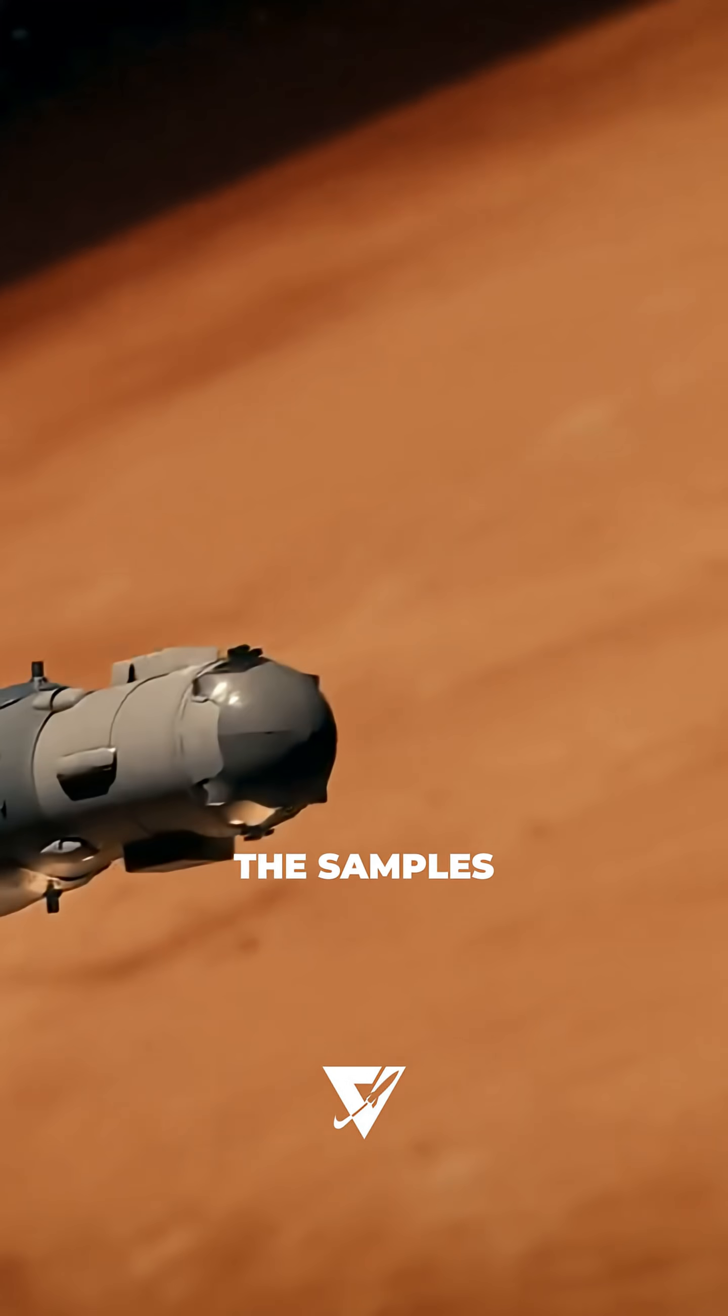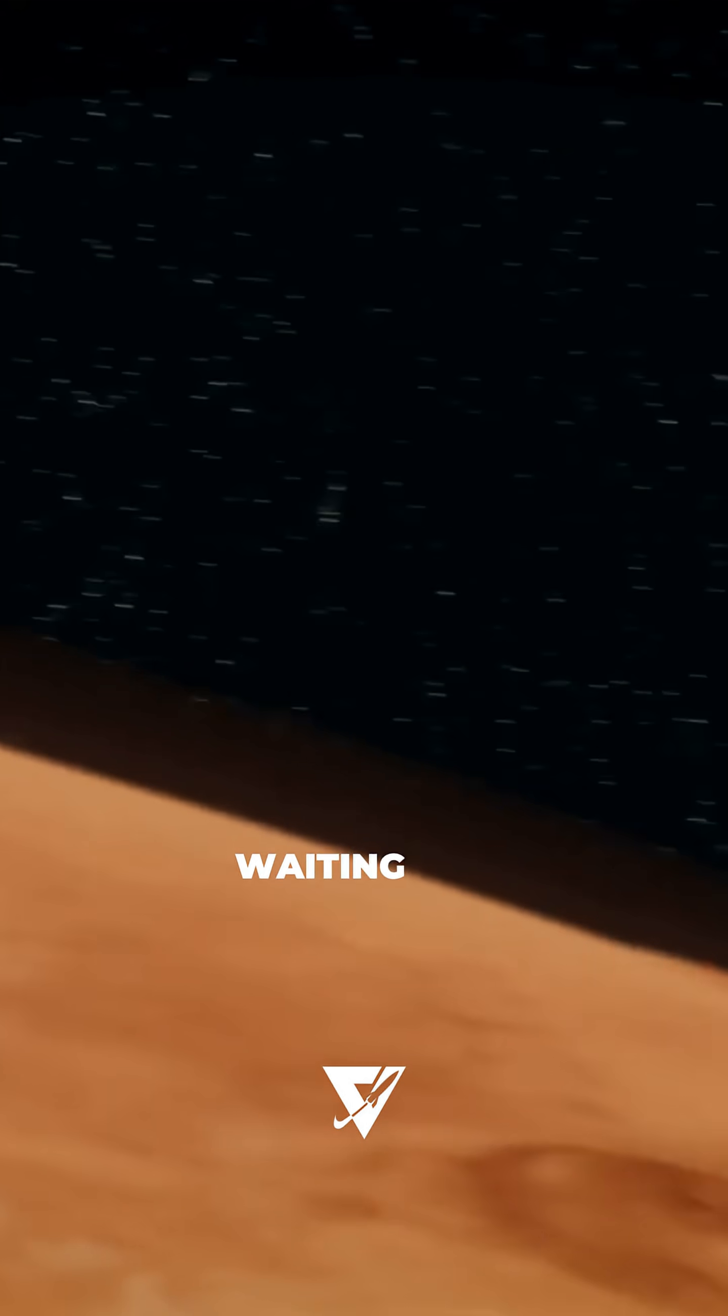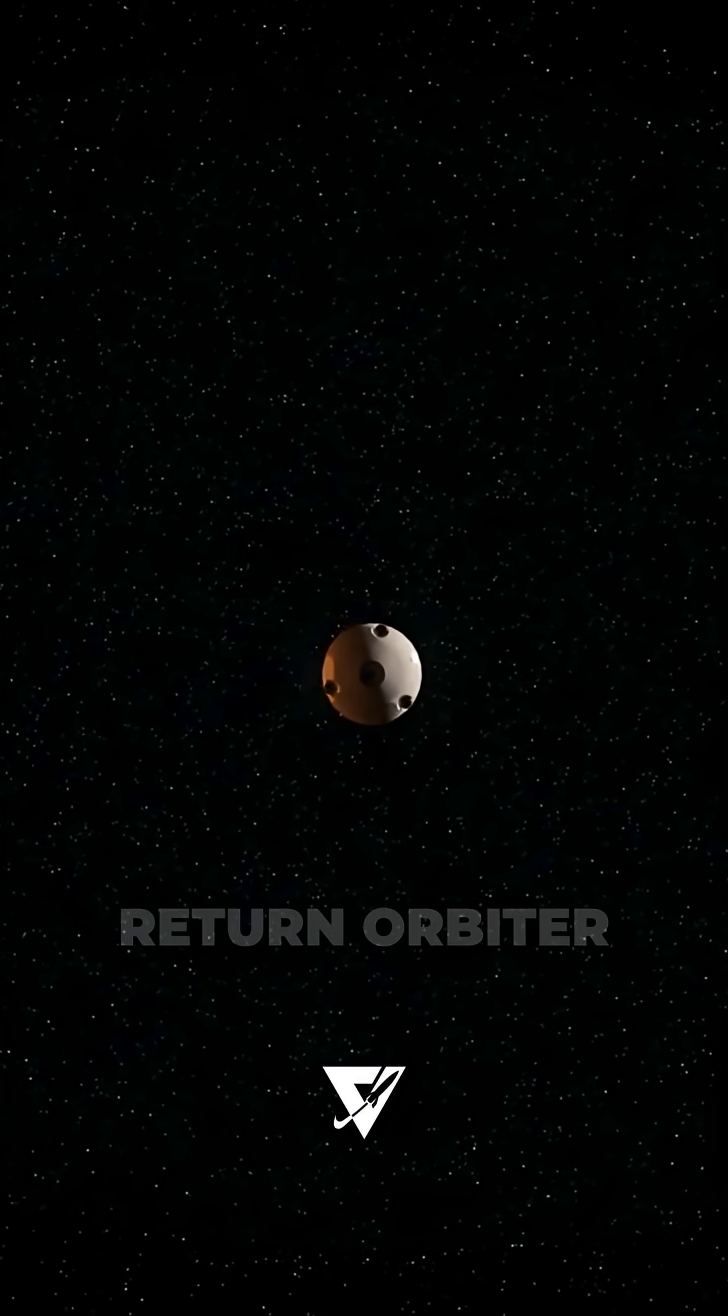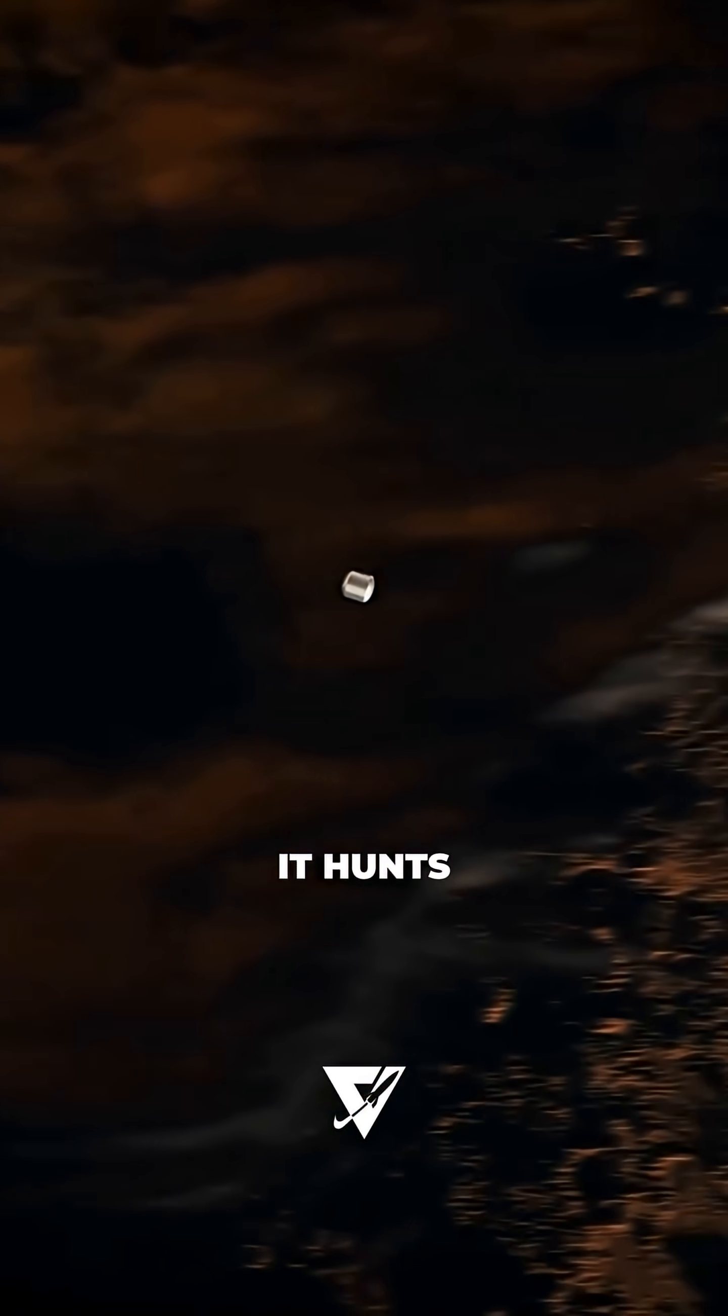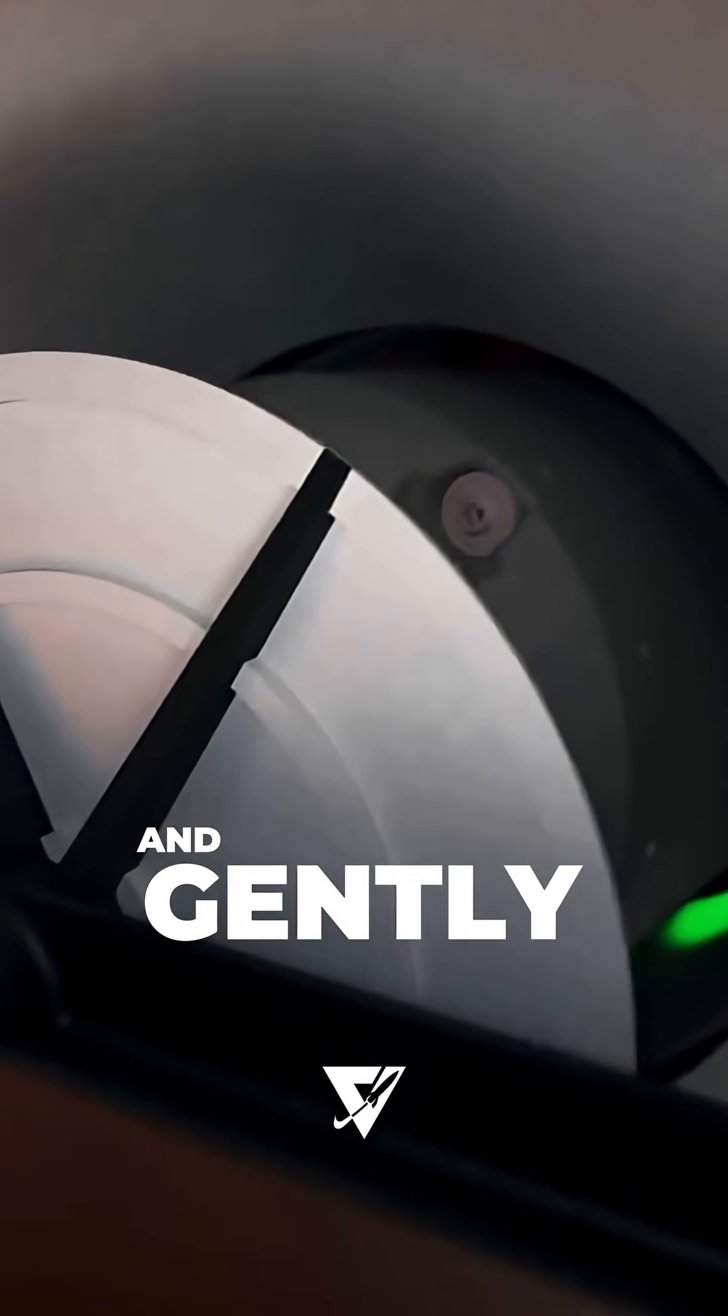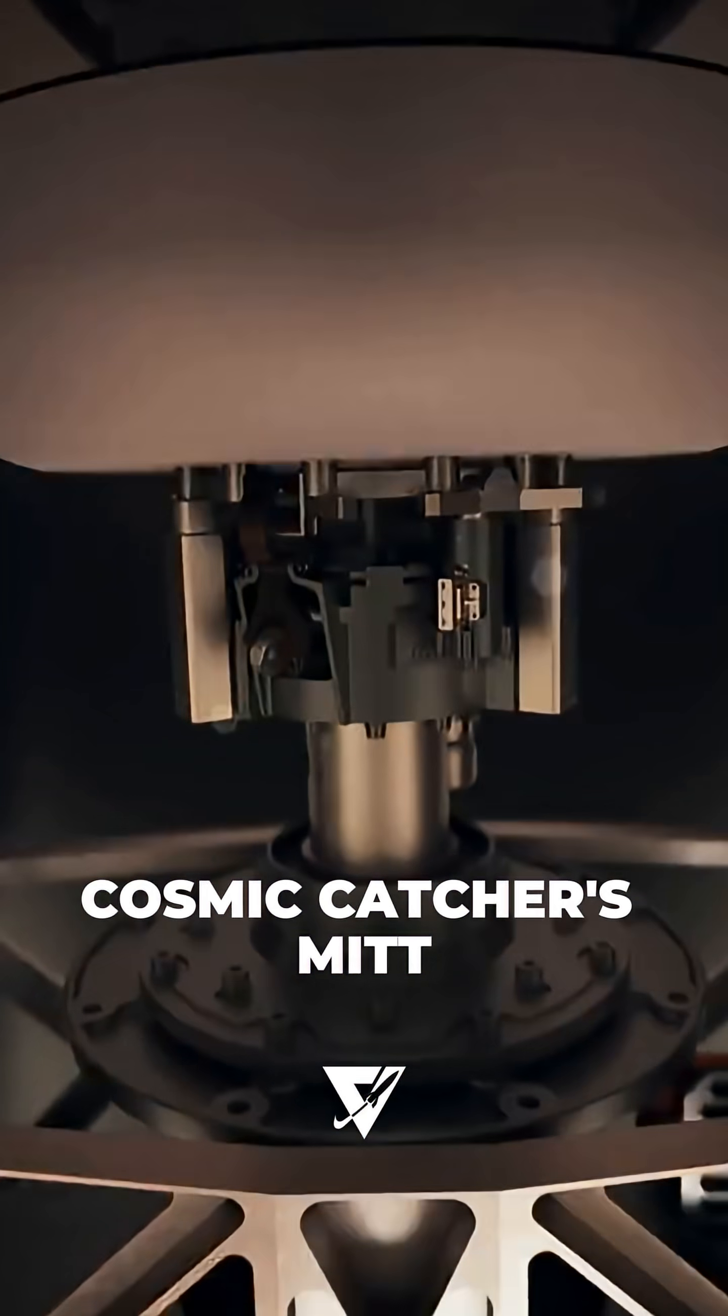The samples drift in orbit, waiting for the next step. ESA's Earth Return Orbiter hunts the sample container, lines up, and gently captures it like a cosmic catcher's mitt.